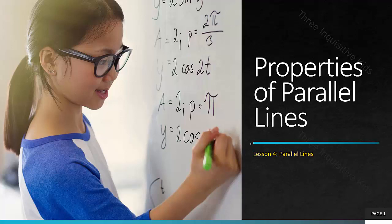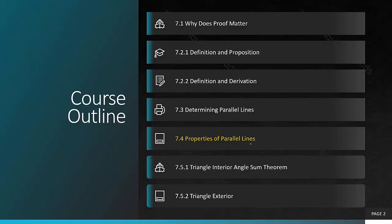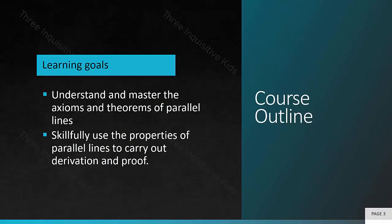Welcome or welcome back to Fury Inquisitive Kids. This video will be on lesson four, properties of parallel lines. Our course outline for this chapter consists of seven separate videos and we are more than halfway through this chapter. In this lesson we will be finishing up on learning parallel lines. Our learning goals for today is to understand and master the axioms and theorems of parallel lines and be able to skillfully use the properties of parallel lines to carry out derivation and proof.